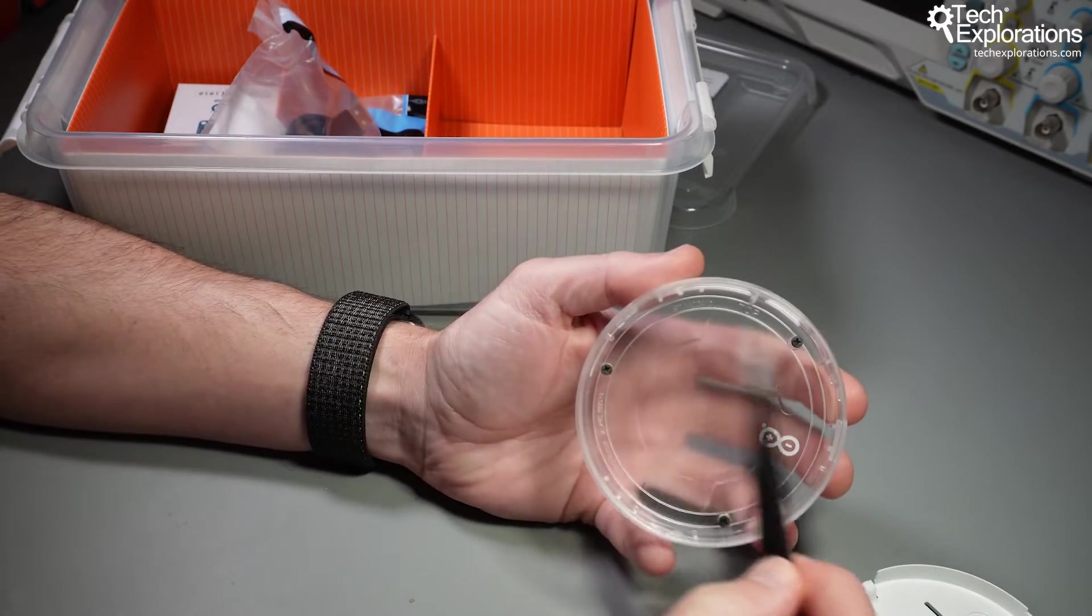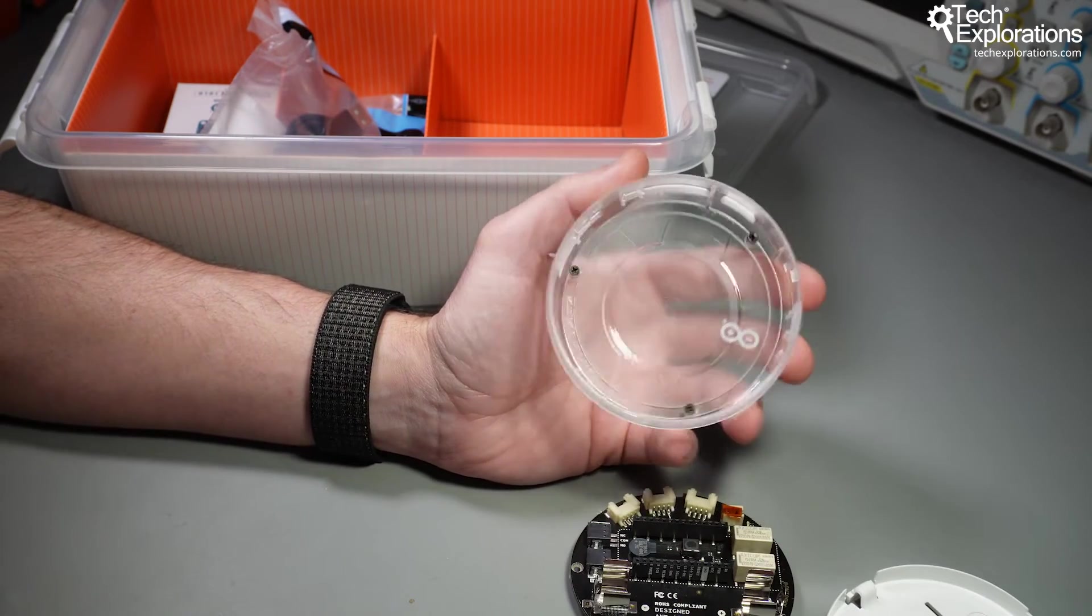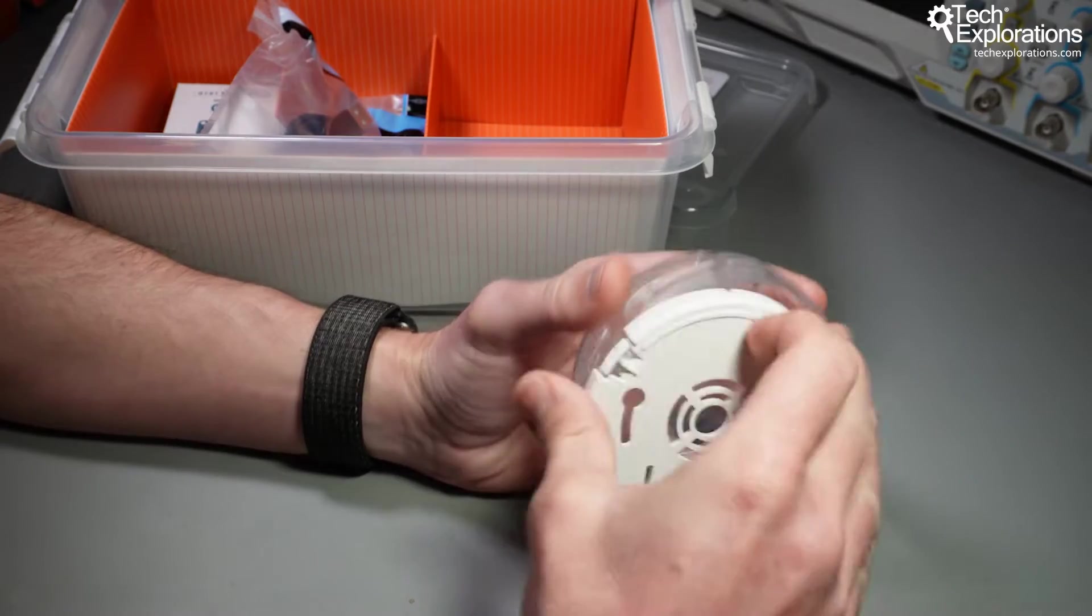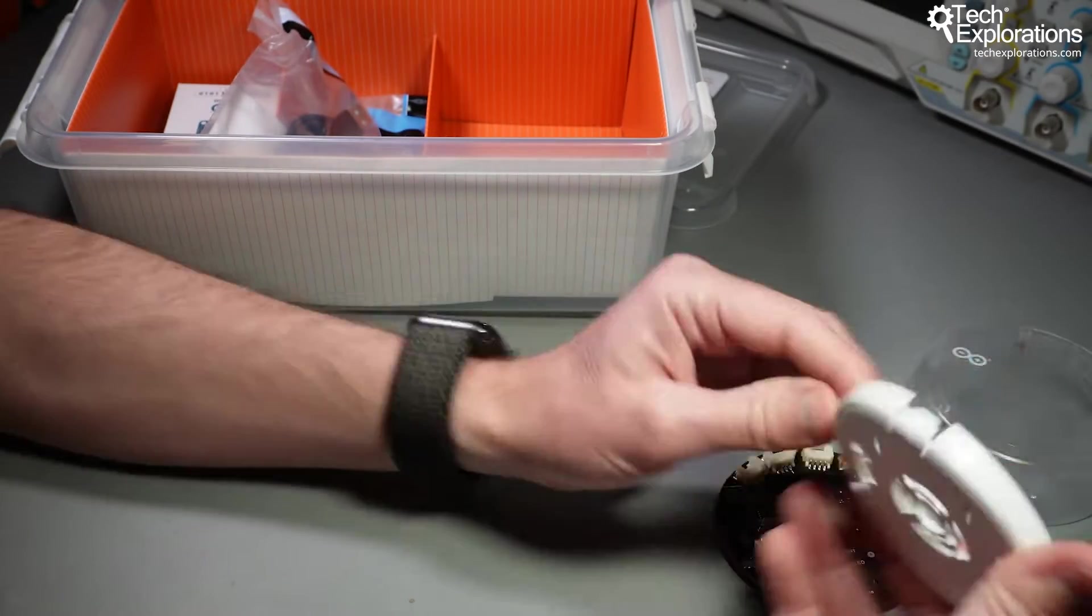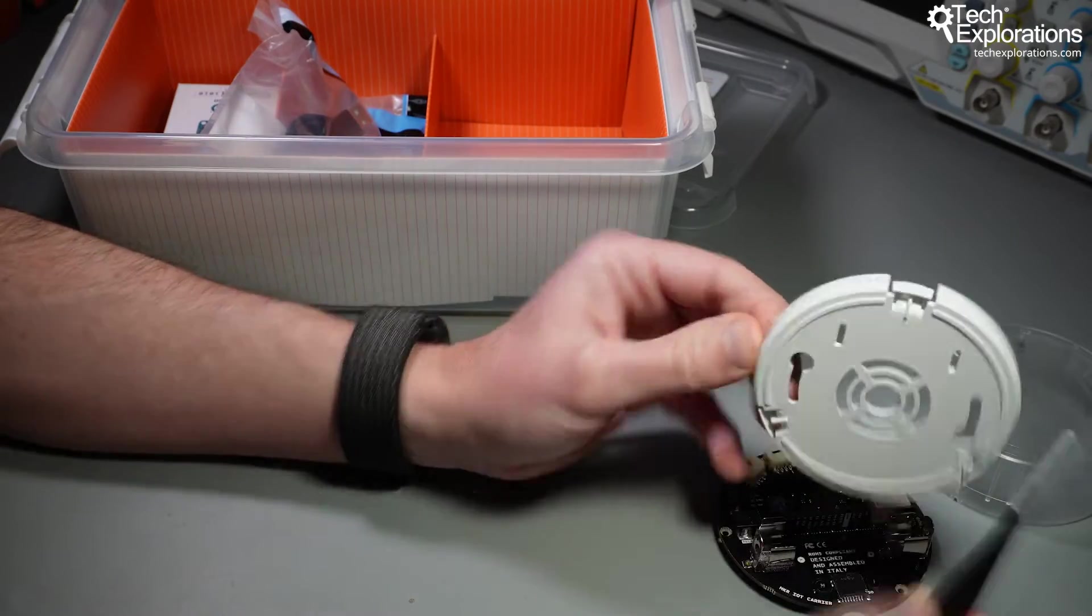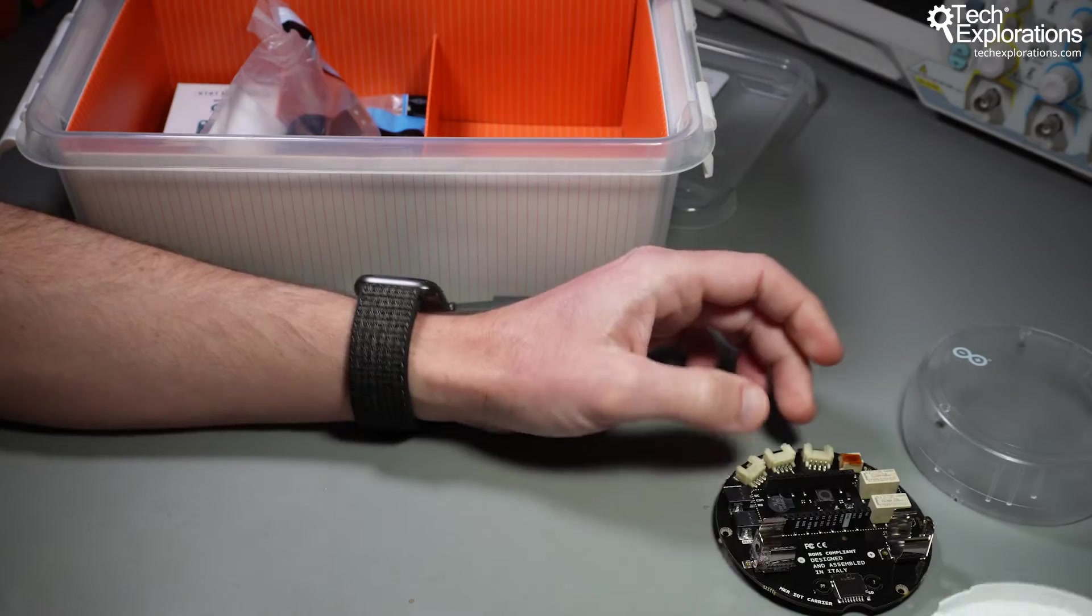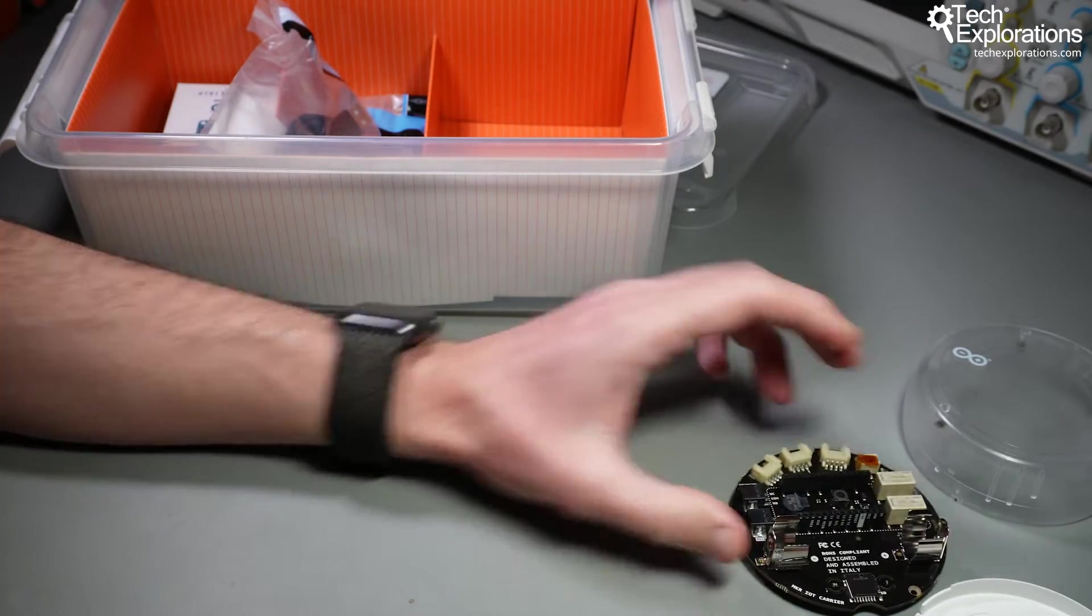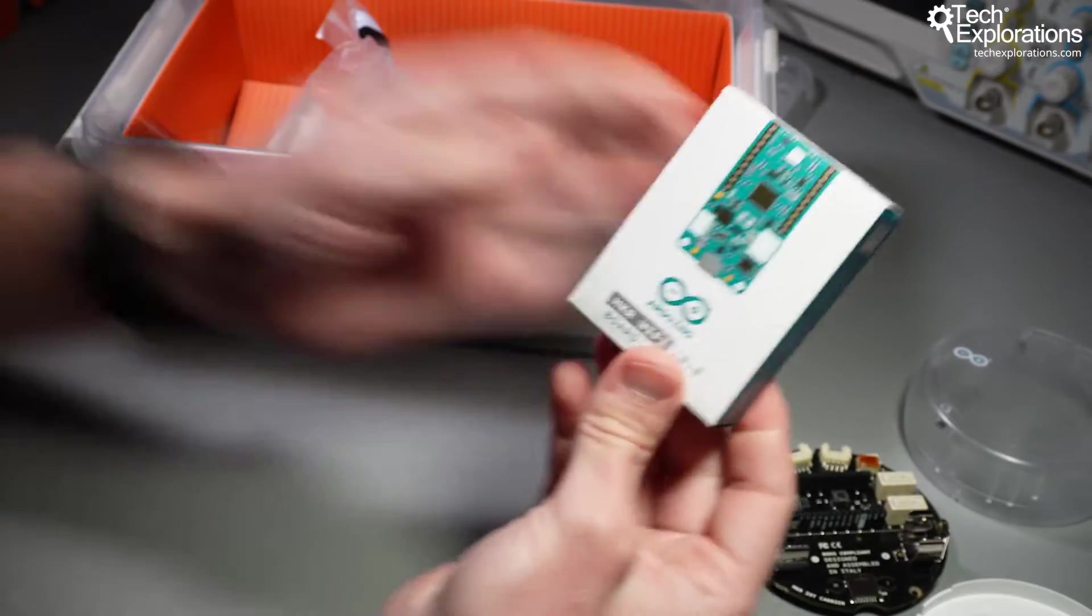There is a set of screws here that allow you to secure the carrier board into the container. You can clip it in and it stays nice and secure. There are also screw cutouts so you can mount this on, say, the wall if you want to use this as an environment monitor. Inside the box, the most important other component is the Arduino MKR WiFi 1010.